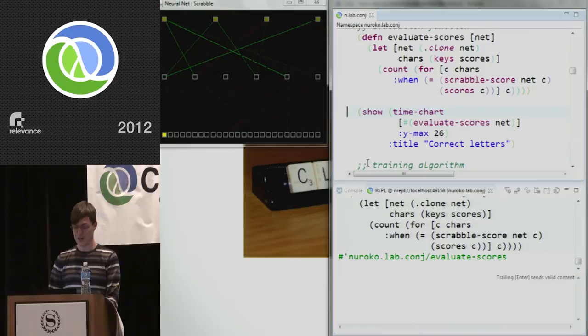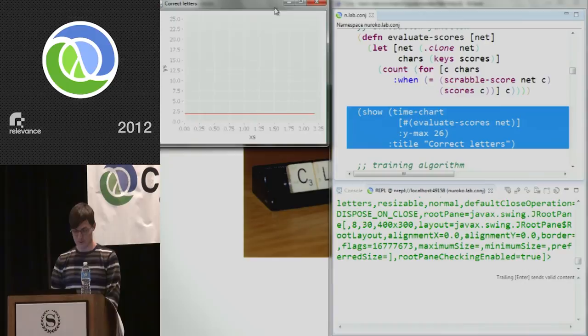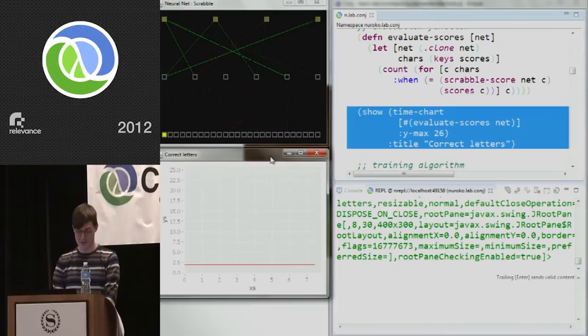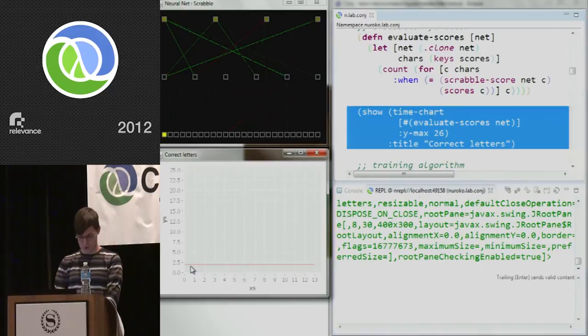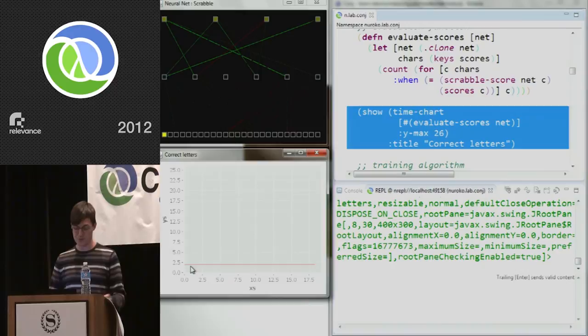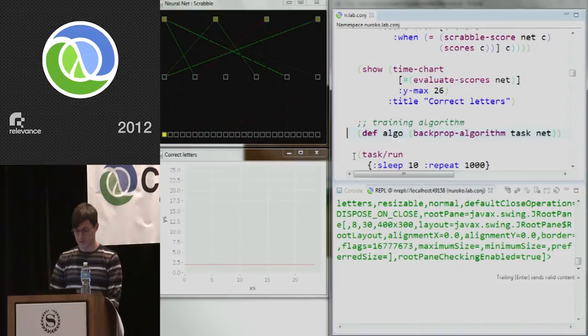So let's define what success looks like. If we're going to evaluate this network, what we're going to do is we're just going to count the number of times when the output of the network, the Scrabble score that it produces, is equal to the actual score from the map. So that's our evaluation function. Let's do some visualization. Let's put that on a time chart. So what I have here is a continuously updating Incanter chart, and Incanter is a great library, by the way, which is just saying how well this network is doing. Currently it seems to be getting two of the scores right, and that's completely by chance.